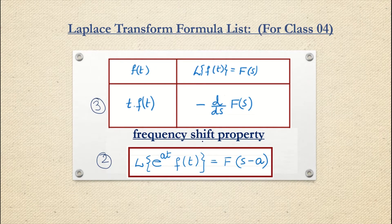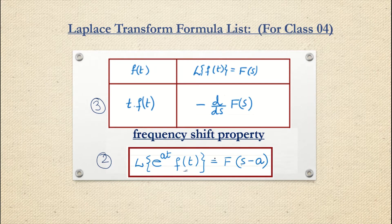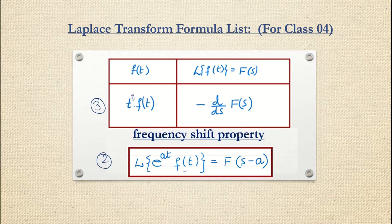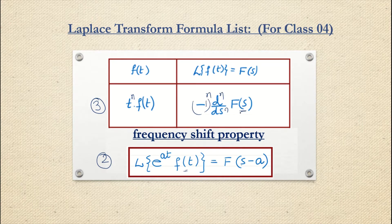Here, this is your frequency shift property where we have e raised to at multiplied with function f(t), and we have seen how we get the function in the frequency domain with the frequency shifted by a. In the last class, we had seen multiplying by t with any function f(t) — t can be n or anything. So if it is 1, then it is minus d/ds of F(s); if it is n, then it will be (-1)^n times d^n/ds^n of F(s). The function in the frequency domain is differentiated n number of times.